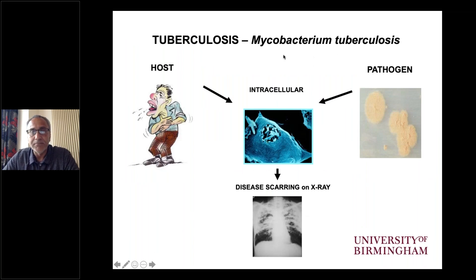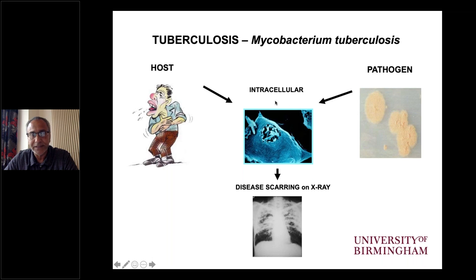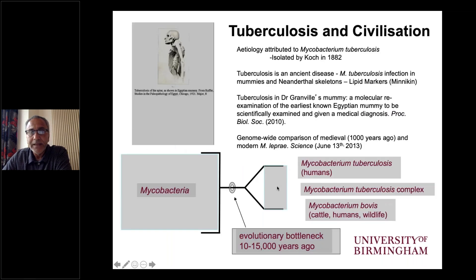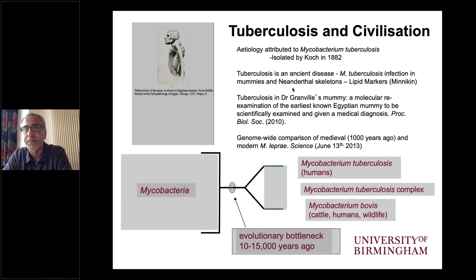Mycobacterium tuberculosis causes tuberculosis. It's a pathogen that infects us as the primary host and is an intracellular pathogen residing within macrophages. We typically associate tuberculosis with that characteristic disease scarring seen on chest X-rays. It's an ancient disease, described by Robert Koch in 1882. Working with my colleague at Birmingham, Professor David Menneken, we've been exploiting lipid biomarkers to identify tuberculosis in terms of its evolution.